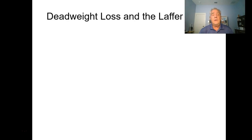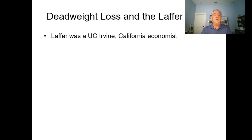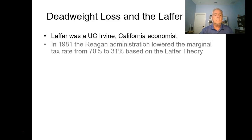In the Reagan administration, economist Arthur Laffer at the University of California Irvine took the analysis of dead weight loss and applied it to the impact of tax percentages on income taxes. He made an interesting analysis that was used by the Reagan administration as justification for reducing the federal income tax on U.S. workers.